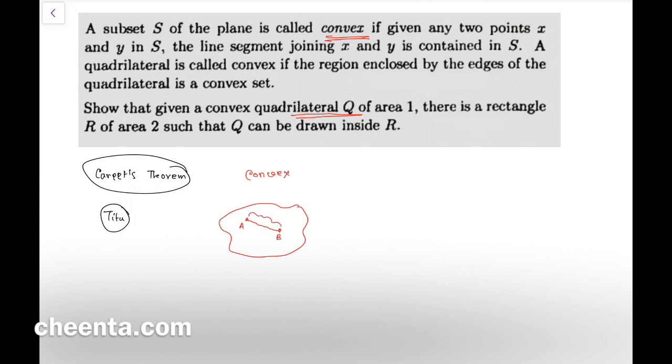The picture that I have drawn is not convex, because if I take two points here and if I try to join that using a straight edge, a portion of that straight edge will be outside the figure. So this is not convex.